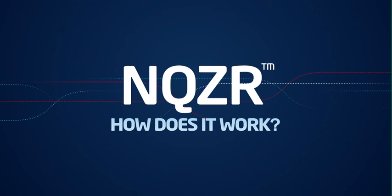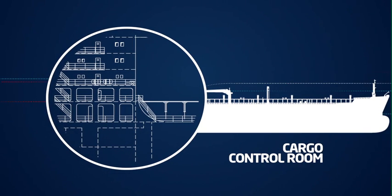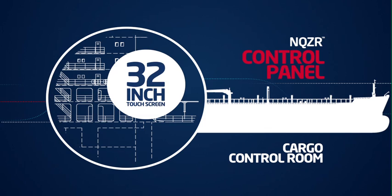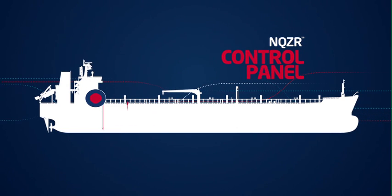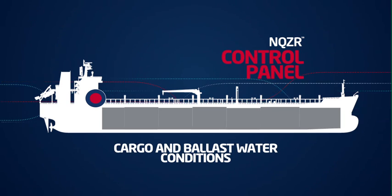Encuser. How does it work? Let's take a look at the cargo control room of a ship. Here we find the Encuser control panel. A 32-inch touchscreen that surveys and controls all Marflex electric-driven Deepwell pumps, as well as cargo and ballast water conditions.